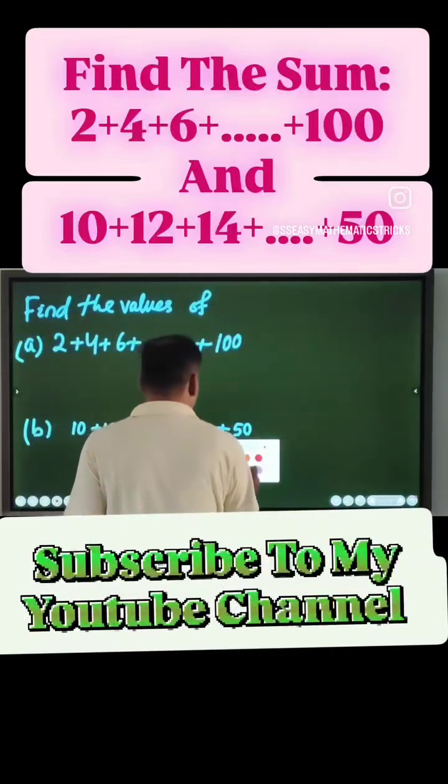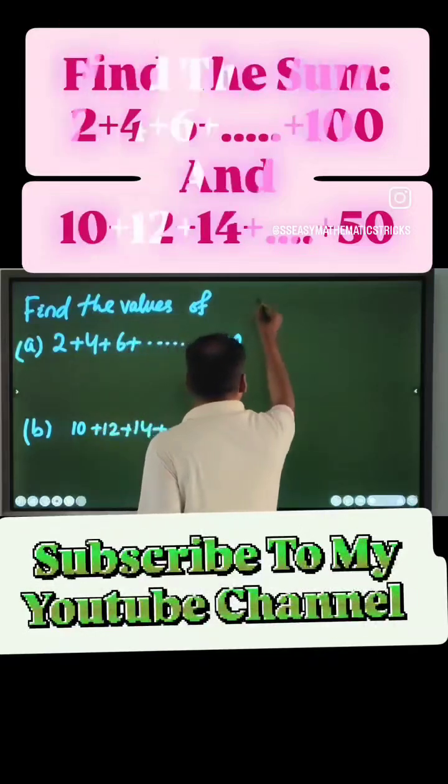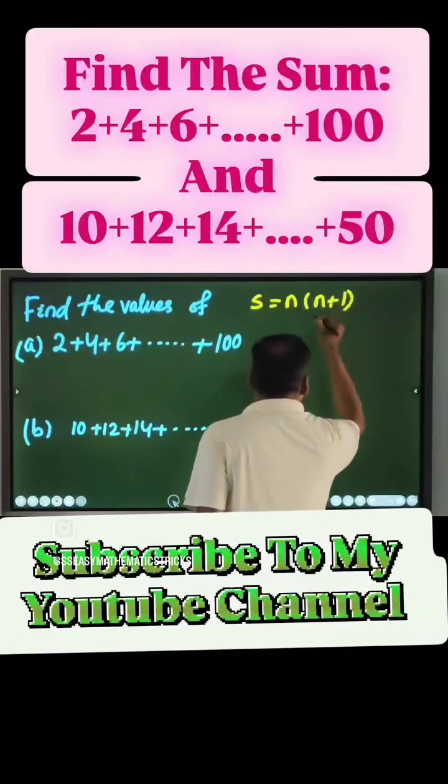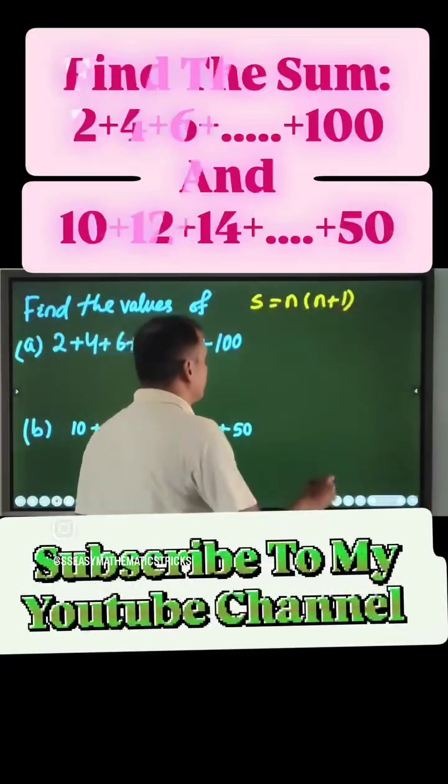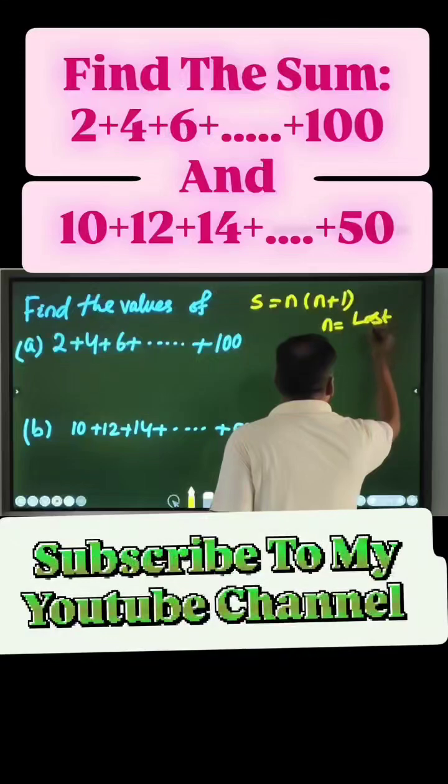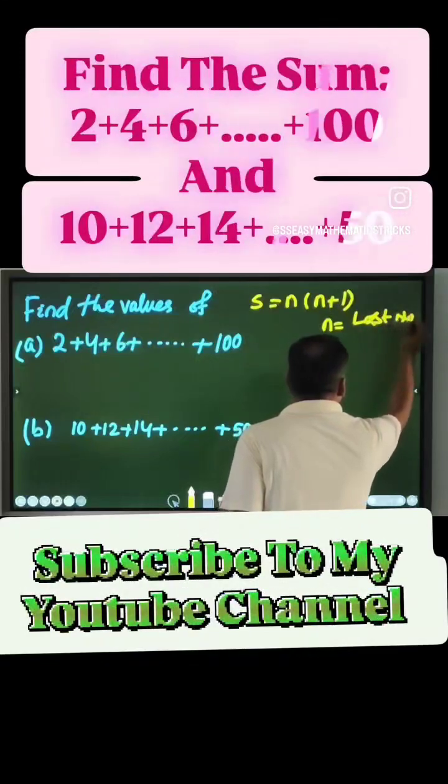What is the formula to find sum of even numbers? S is equal to n into n plus 1. What is n? n always last number by 2.